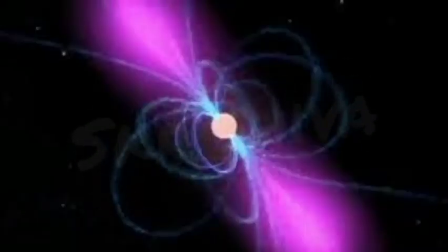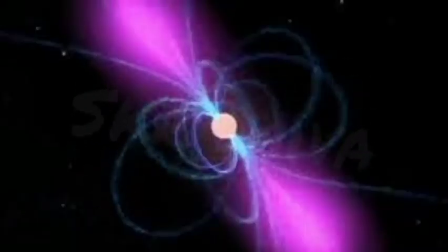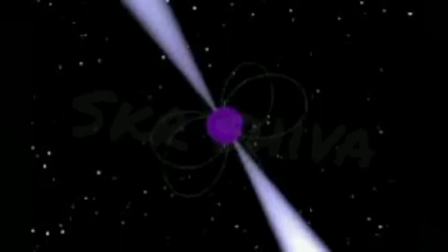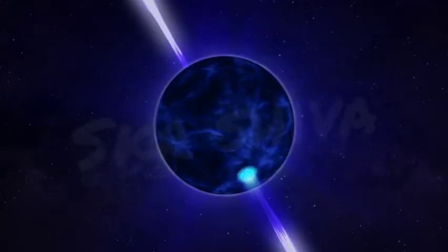Astronomers have discovered a pulsar that's not a neutron star at all, but a white dwarf. It's the first white dwarf pulsar ever discovered after more than 50 years of searching the skies for such an object.